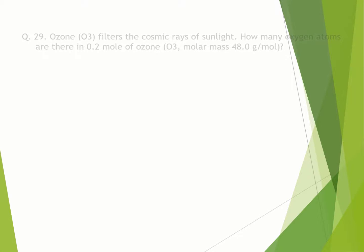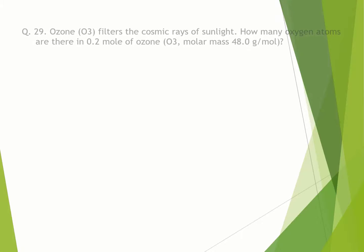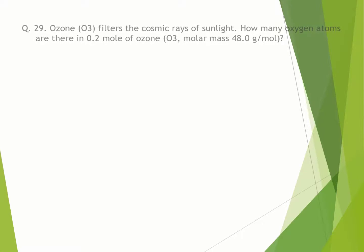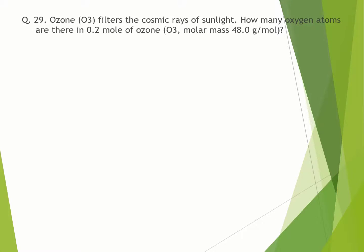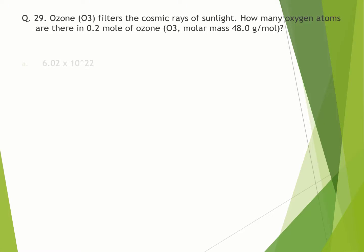Question number 29. Ozone filters the cosmic rays of sunlight. How many oxygen atoms are there in 0.2 moles of ozone O3, molar mass 48.0 grams per mole? A. 6.02 into 10^22. B. 6.02 into 10^23. C. 3.61 into 10^23. D. 6 into 10^23. Correct option is C.